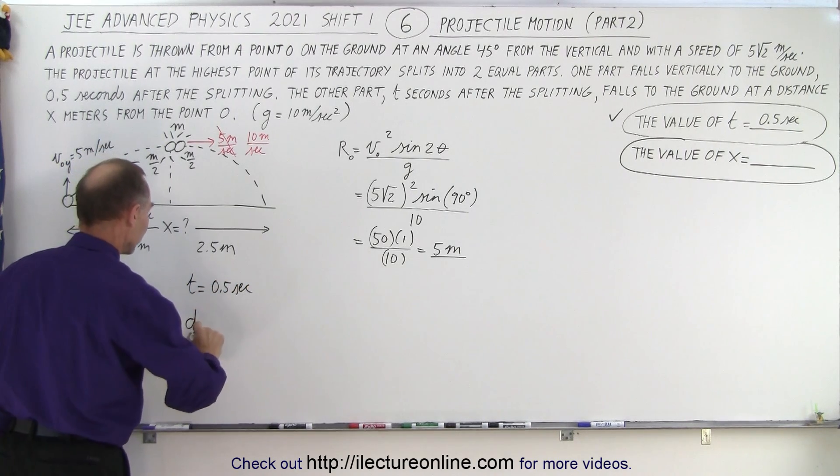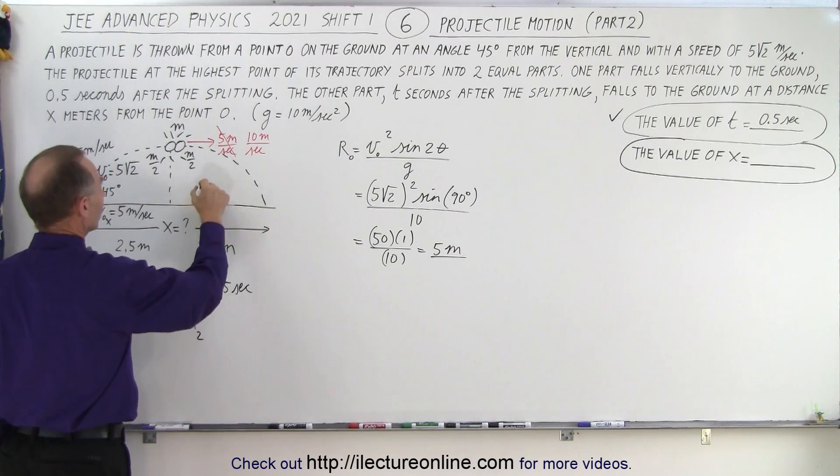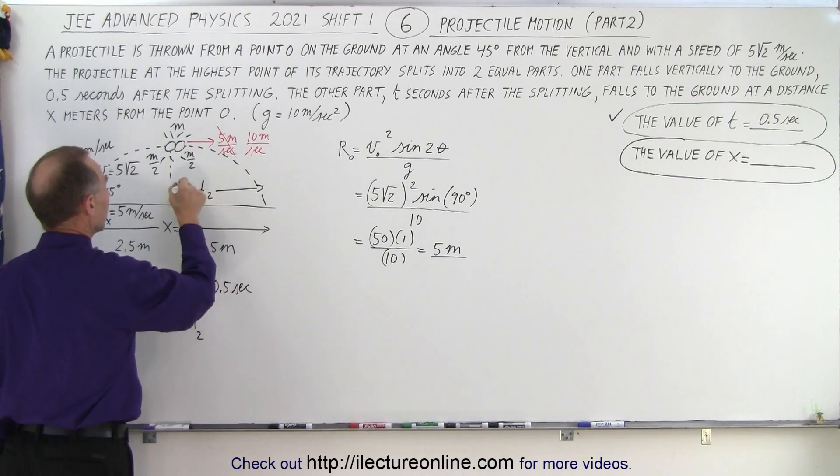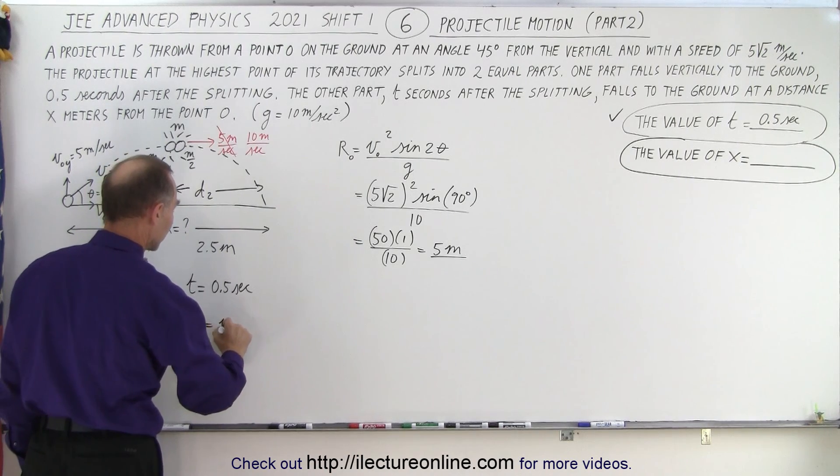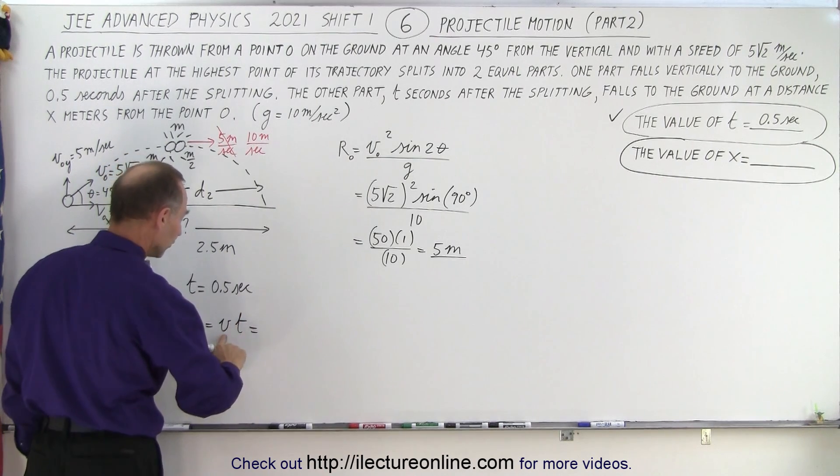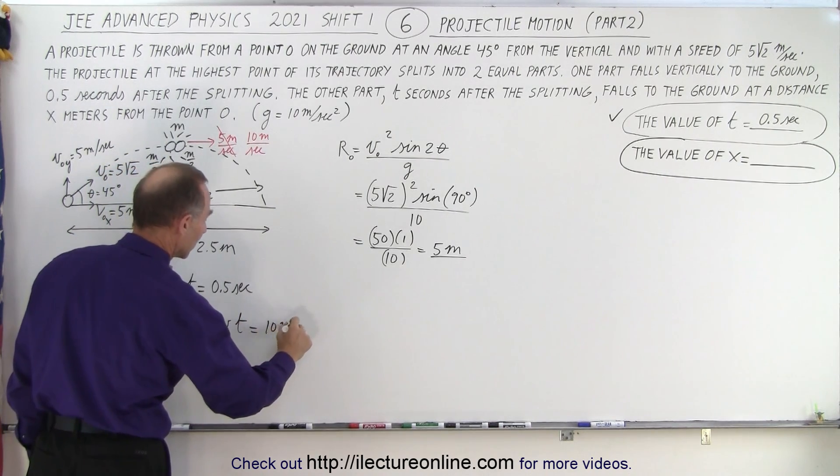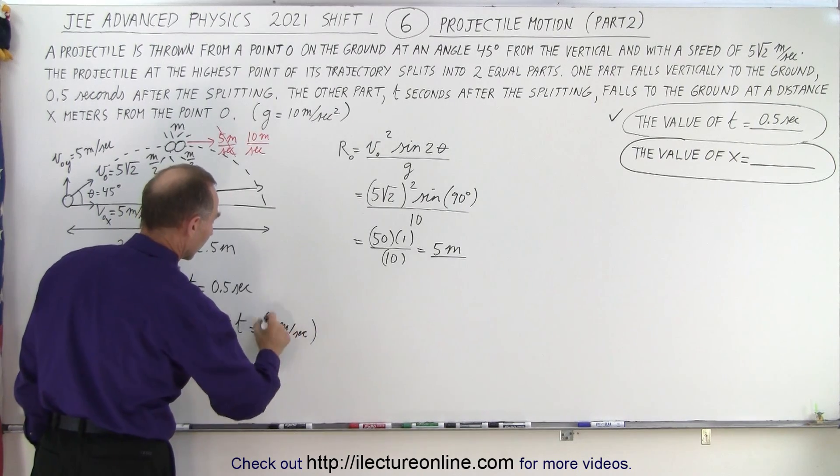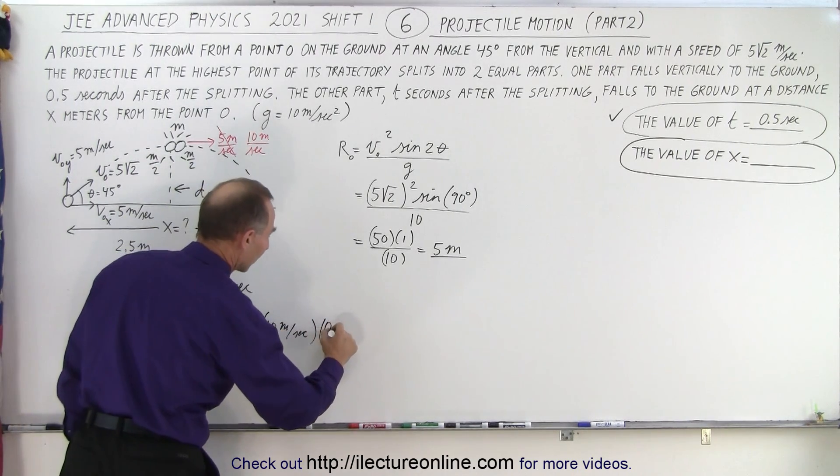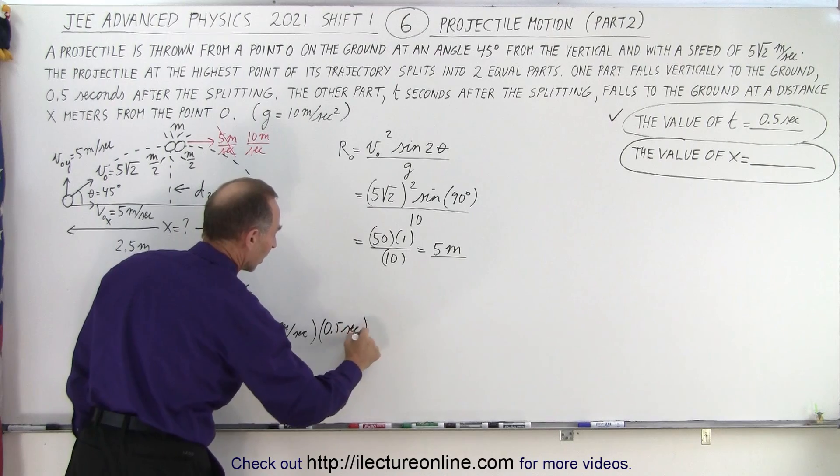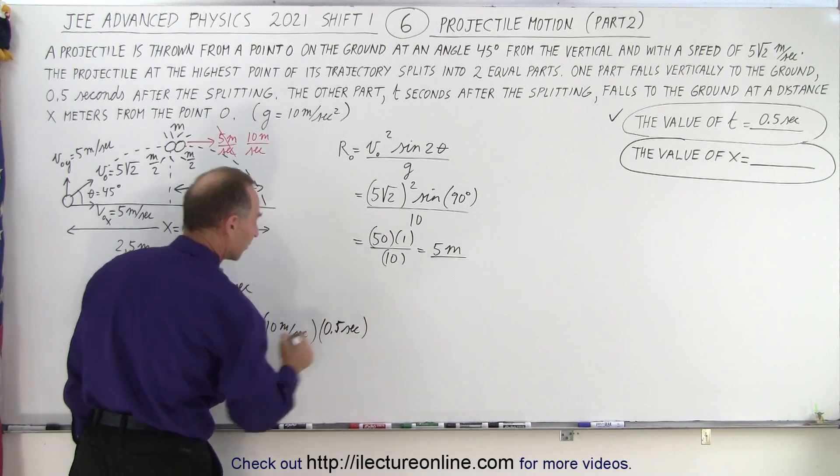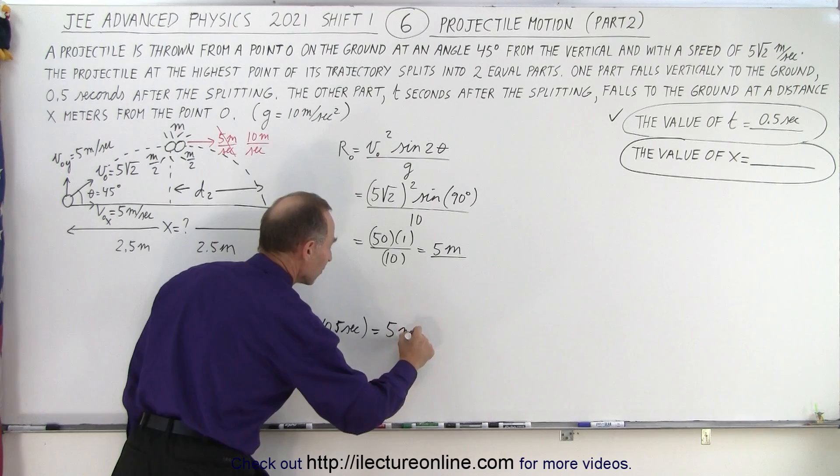And so therefore the distance for the second part, let's call this distance 2 for the second part, is going to be equal to the velocity times time, and the new velocity is now going to be 10 meters per second. The time is still going to be a half a second, 0.5, and so that would be equal to 5 meters.